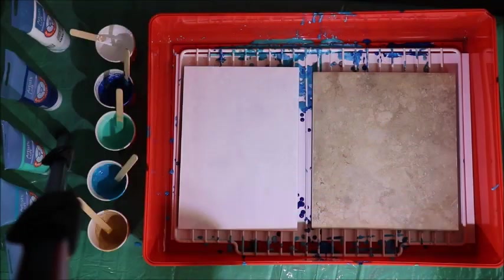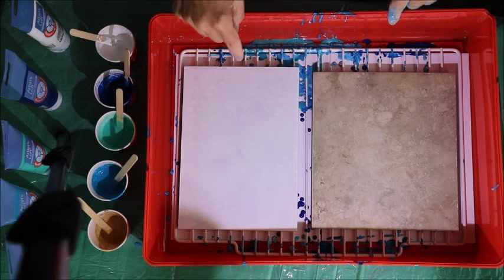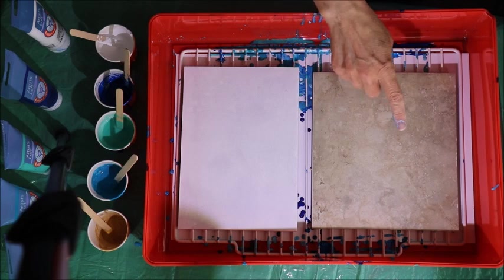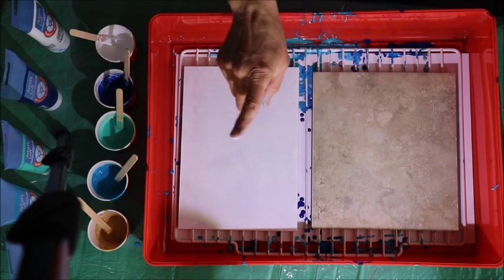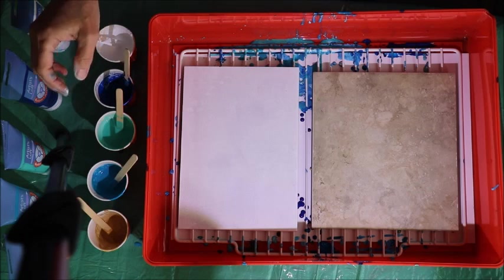So here I am back again doing some more experimenting with acrylic paint pouring. I am wanting to try acrylic paint pouring on old tiles, so I've taken two tiles. These are leftover pieces from floor tiling. One I'm just doing it directly onto the tile. The other one I have put a coat of white paint on it just to see if it makes any difference in the way it works.